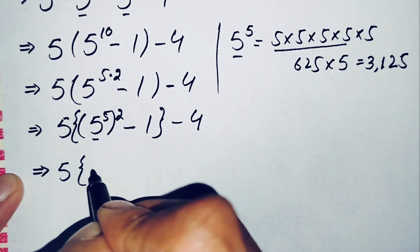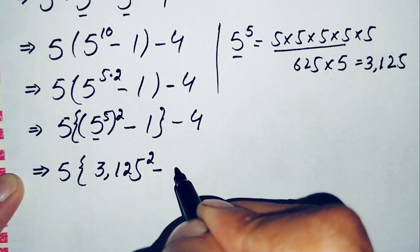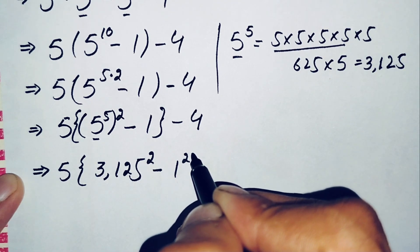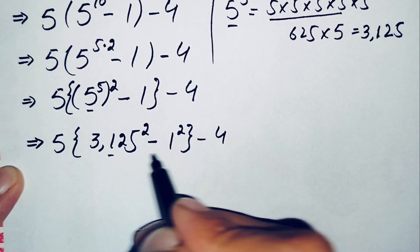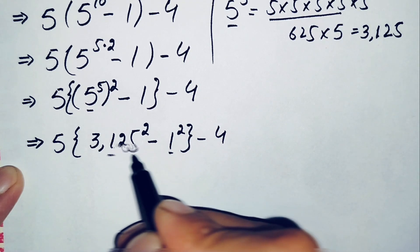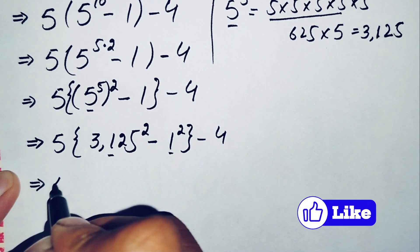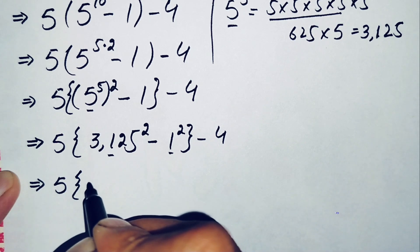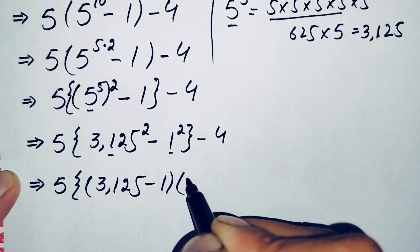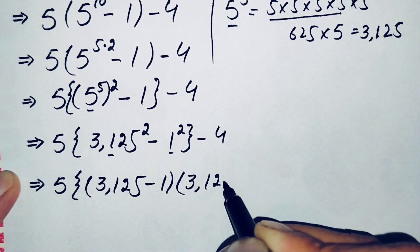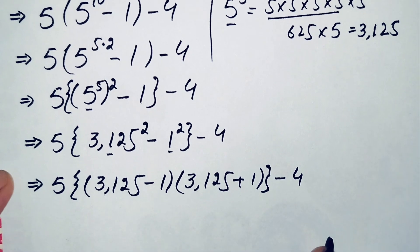So we will replace 5 raised to power 5 with its value 3125. This becomes: 5 times 3125 whole squared, minus 1 squared — because 1 squared is simply 1 — minus 4. Now inside the brackets we will use the algebraic identity a squared minus b squared equals a minus b times a plus b. So this becomes: 5 times (3125 minus 1) times (3125 plus 1), minus 4.